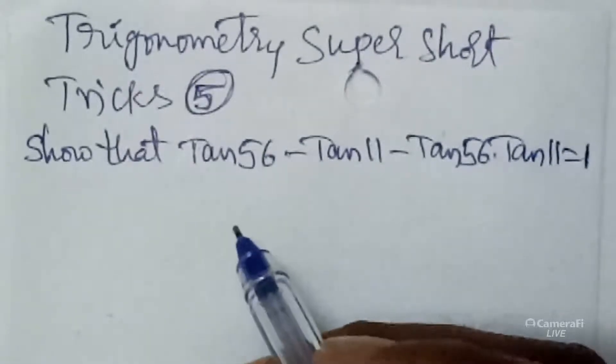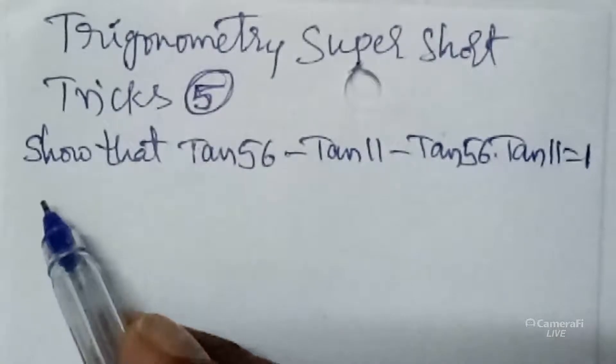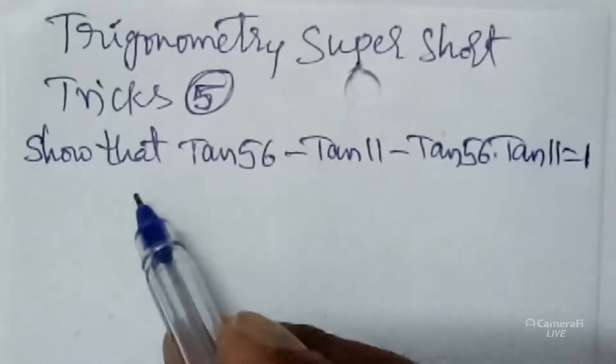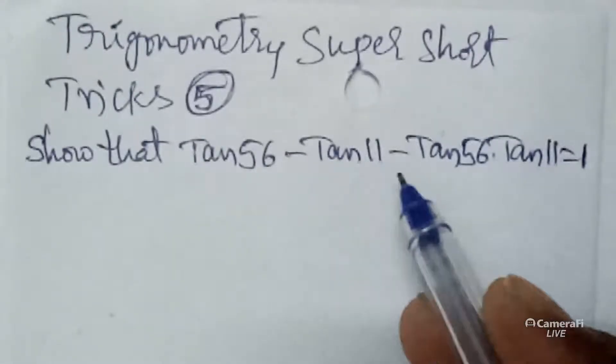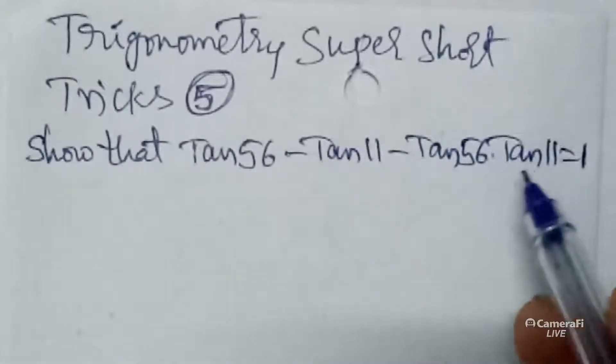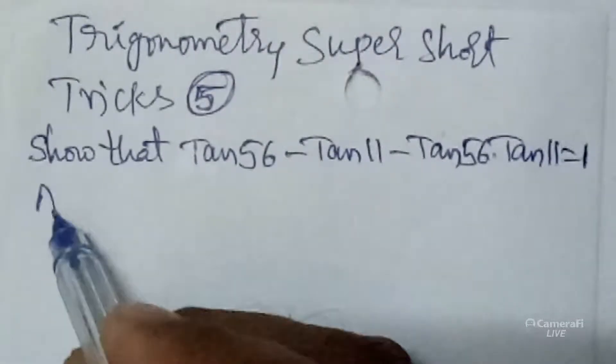The description box is below this video. Today our short trick question is: show that tan 56 minus tan 11 minus tan 56 into tan 11 is equals to 1.